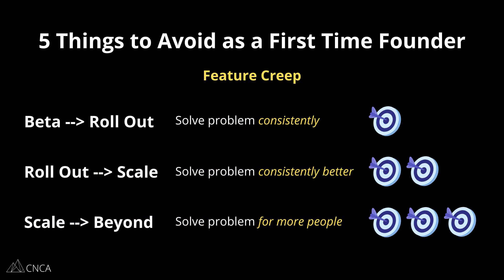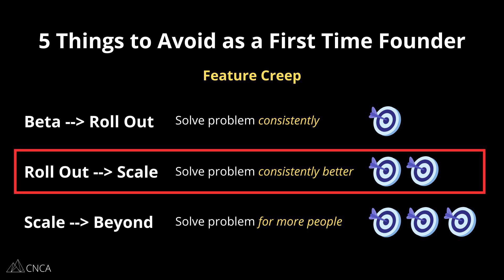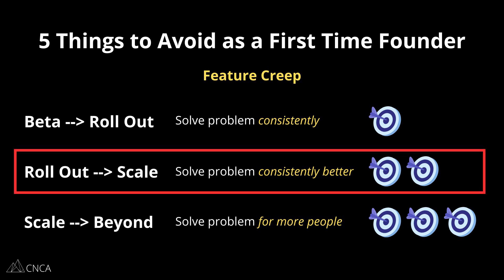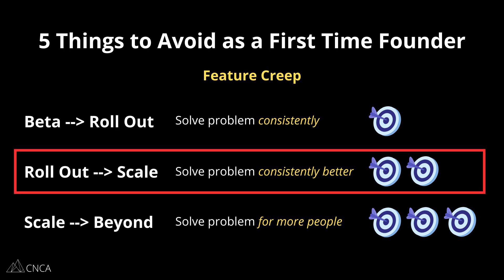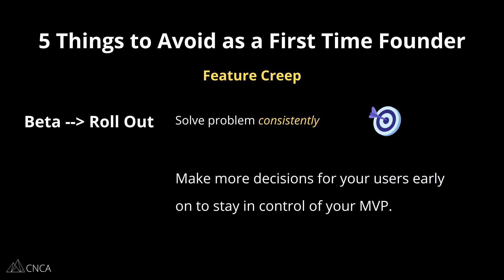Most people try to build their MVP in the 'consistently better' stage — that's two to three versions beyond where you should start. If you're giving your users multiple ways to accomplish the exact same task, you're overbuilding. I've always recommended with our own clients to make more decisions for their users in the early stages of the app, rather than giving them multiple pathways to the same solution.